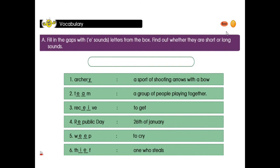Look here — vocabulary. They have given a fill-in-the-gaps exercise with letters from a box on page number 23. Find out whether they are short or long sounds. First word: Archery — in the blank space you write Y. Archery is a sport of shooting arrows with a bow. That game with arrow and bow is called archery.